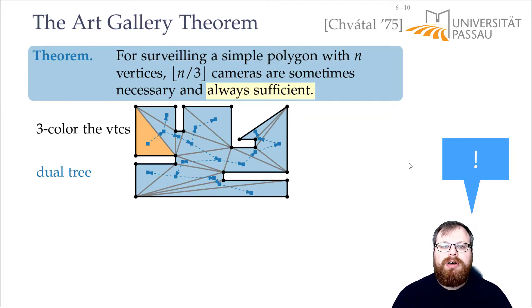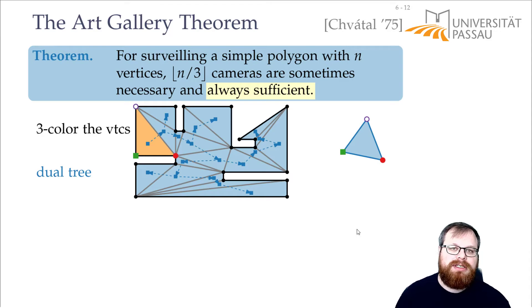Remember, no two vertices that share an edge are allowed to have the same color. So all the three vertices must get different colors. We don't care which ones, we can just pick any three colors. Here I have red, green and purple. So we give those colors to these three vertices.